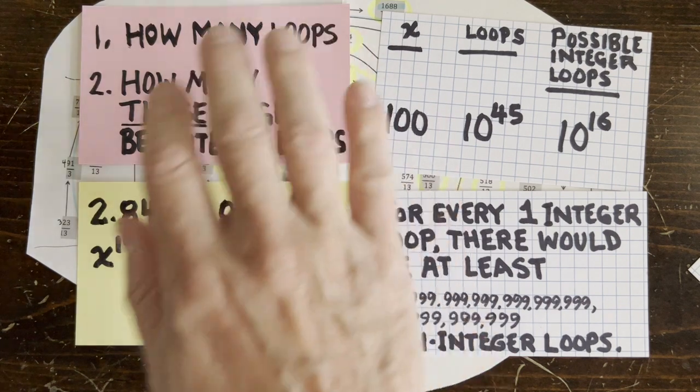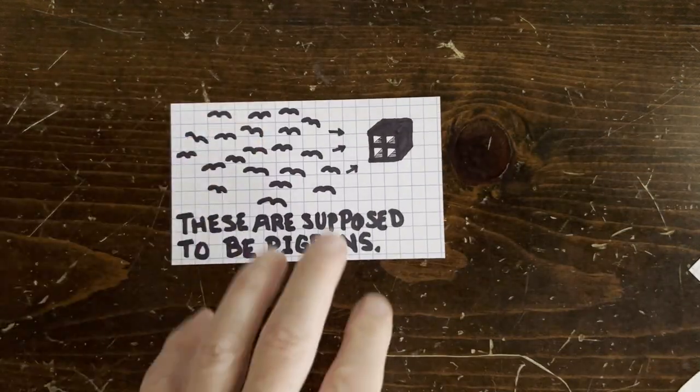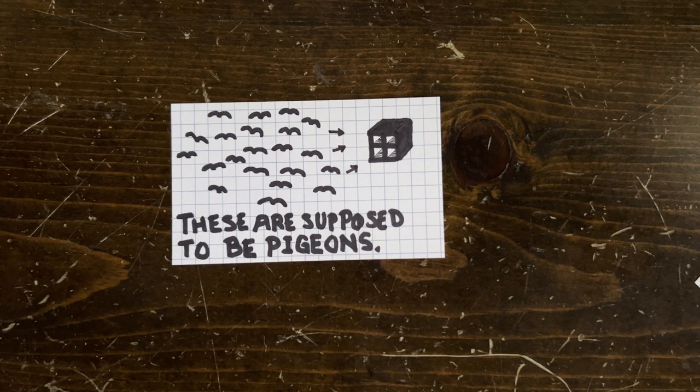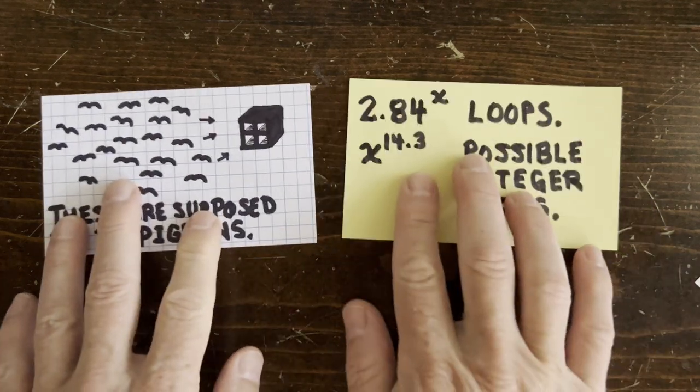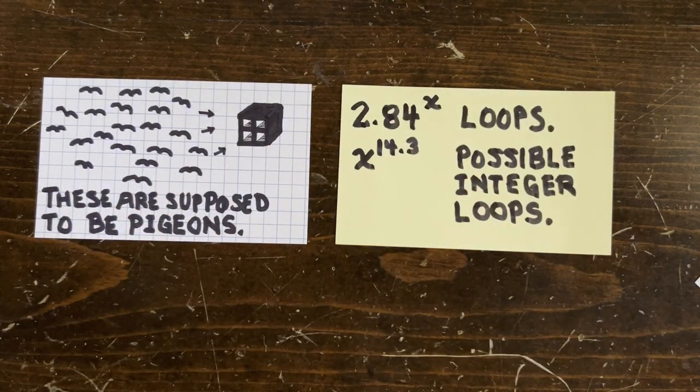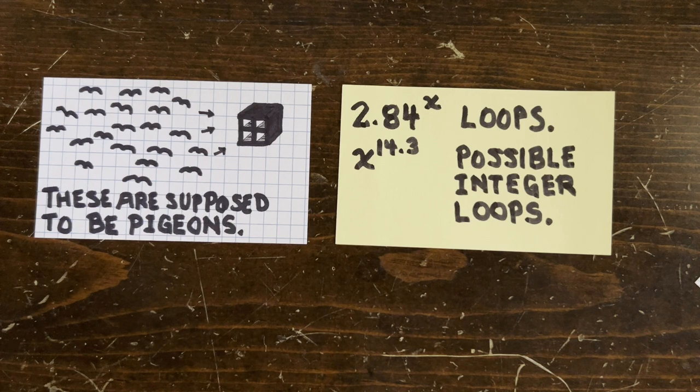Or if every loop is a pigeon and having integer numbers in it is a pigeon hole, then there's just way too many birds. Of course, the 3n plus 1 conjecture says there's no pigeon holes at all. So sorry, birds, if the conjecture is true.